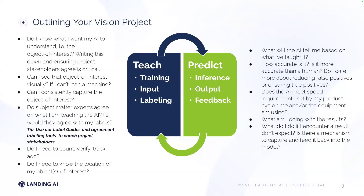There's so much opportunity, but getting started it's first just the basics of outlining: what am I showing my AI? What do I want it to understand? Is it a defect in an image? Am I actually asking it to count or identify and verify the number of screws in a car door? The sky is really the limit if you can capture your object of interest, your labels, your classes, your inputs visually.